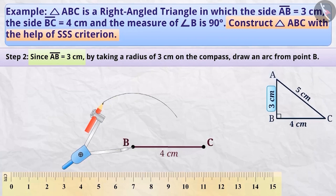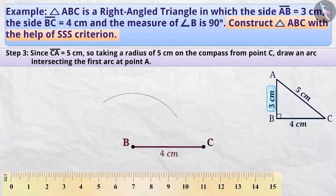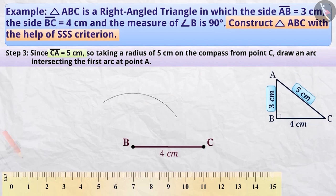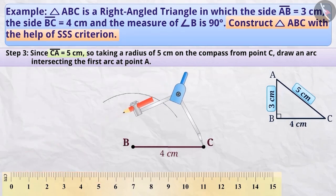Point A is situated on the arc. To find the exact location of point A on the arc, we need to draw another arc. Step 3: We know that the length of the side CA is 5 cm. This means that point C is at a distance of 5 cm from point A. So now we will measure 5 cm with the help of a compass, assuming point C as the center, and draw an arc.